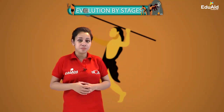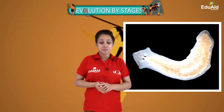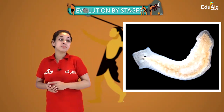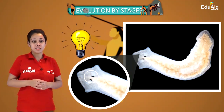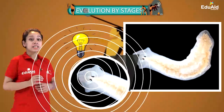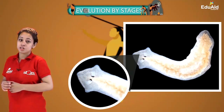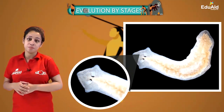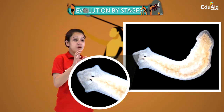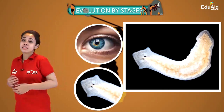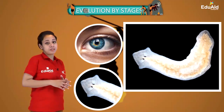Let us consider an example. We have heard about the flatworm planaria, which can regenerate. Now this planaria has some eye-like structure at the top of their body. But these eyes are not like ours — they are simply eye spots that can detect the intensity of light. These rudimentary eyes are present in the earlier stages of development of the planaria, and they give a survival advantage. From such a simple eye structure, complex eye structures have evolved over the course of time, which gives organisms a survival advantage.